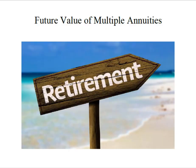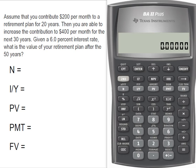Hey everybody, it's Professor Williams and we're going to look at the future value of multiple annuities in relationship to saving for retirement. We're going to assume that you contribute $200 per month to a retirement plan for 20 years, but then you're able to increase the contribution to $400 a month for the next 30 years. We have a 6% interest rate and we want to know what's the value of your retirement plan after the 50 years.